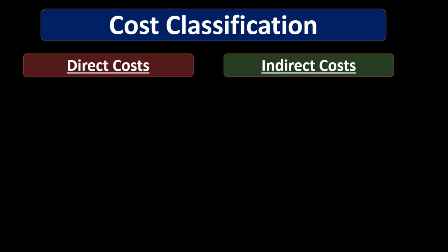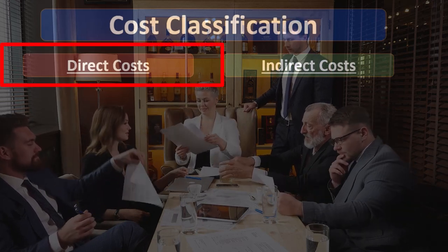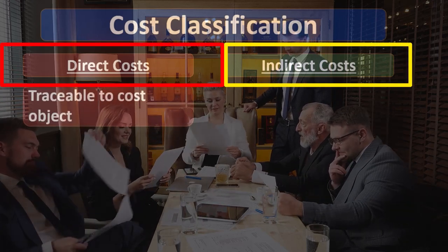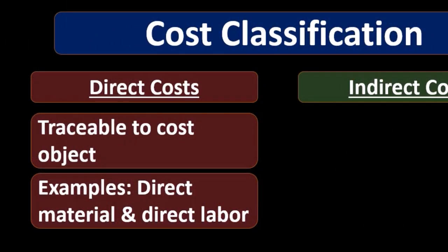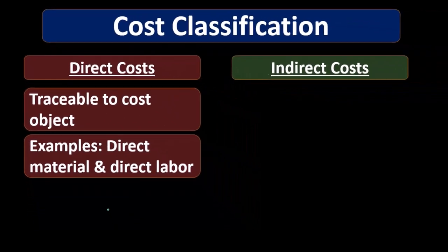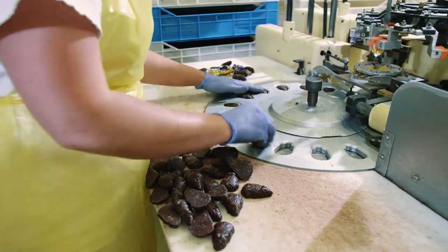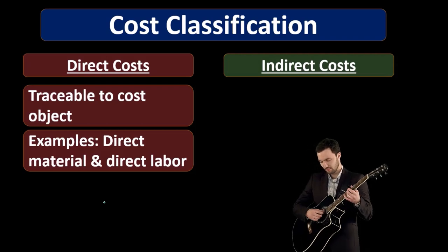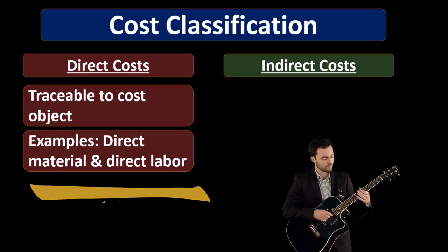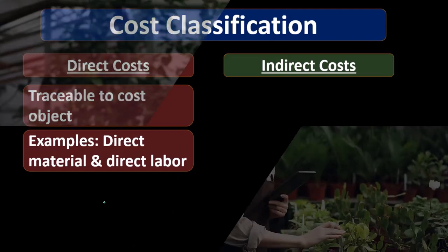Another way we can classify costs is by function — what does that cost do, why are we incurring it? We can have direct costs and indirect costs. Direct costs are costs that are traceable to a cost object. In a production cycle, direct costs would be things like direct materials and direct labor — things we can trace to a particular unit of inventory that we are producing. For direct materials, if we're making guitars, we can trace the wood in the guitar to a particular guitar and allocate the cost of that wood to that piece of inventory. For direct labor, if someone's putting together a guitar, we can allocate the cost of that labor to a particular piece of inventory, a particular guitar.